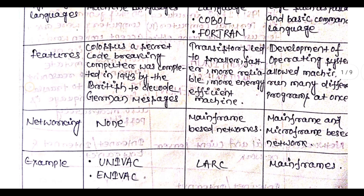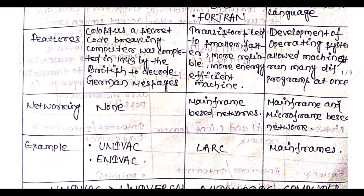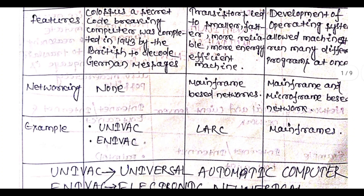As for features: the first generation had Colossus, a secret code-breaking computer completed in 1943, used by the British to decode German messages. In the second generation, the transistor led to smaller, faster, more reliable, and more energy-efficient machines. In the third generation, the development of operating systems allowed machines to run many different programs at once.